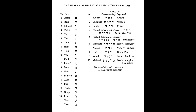Names of the corresponding Sephiroth. 1. Kether — Crown. 2. Chalkmaw — Wisdom. 3. Binah — Mind. 4. Chessid — Grace, Clemency, Will. 5. Pechad — Severity, Intelligence.